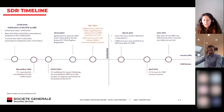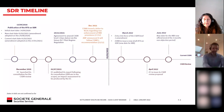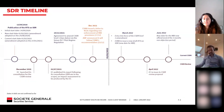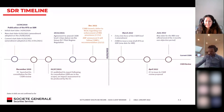Another point worth mentioning is the CSDR review, which is ongoing in parallel. CSDR is quite an old text; its review process started in 2020. In July last year, the European Commission published a document listing six areas where there might be changes to CSDR, one of which is the mandatory buy-in regime. The Commission's proposal was expected end of 2021 or early 2022, but is now expected around April 2022, at which point we will know the new mandatory buy-in regime.